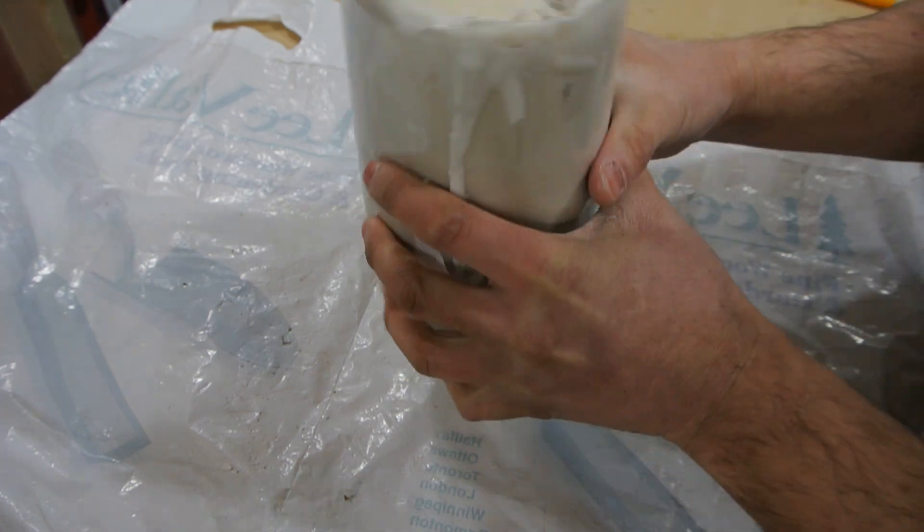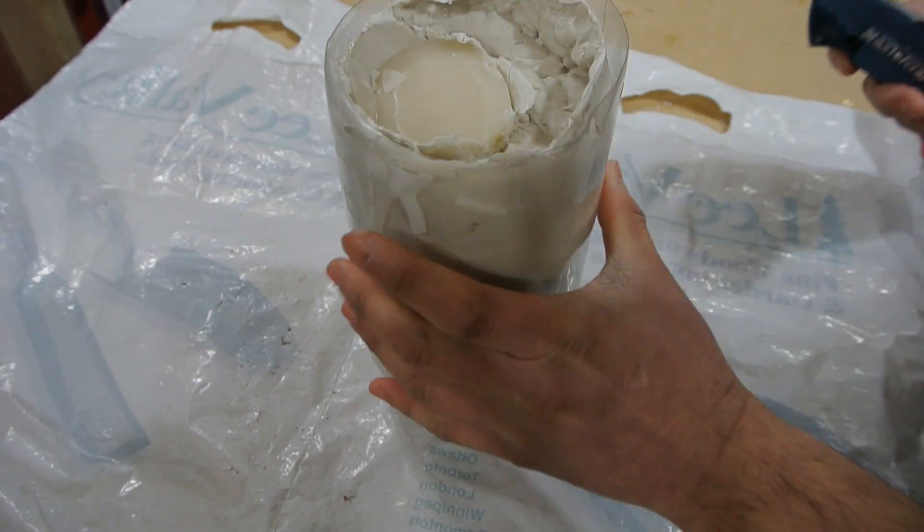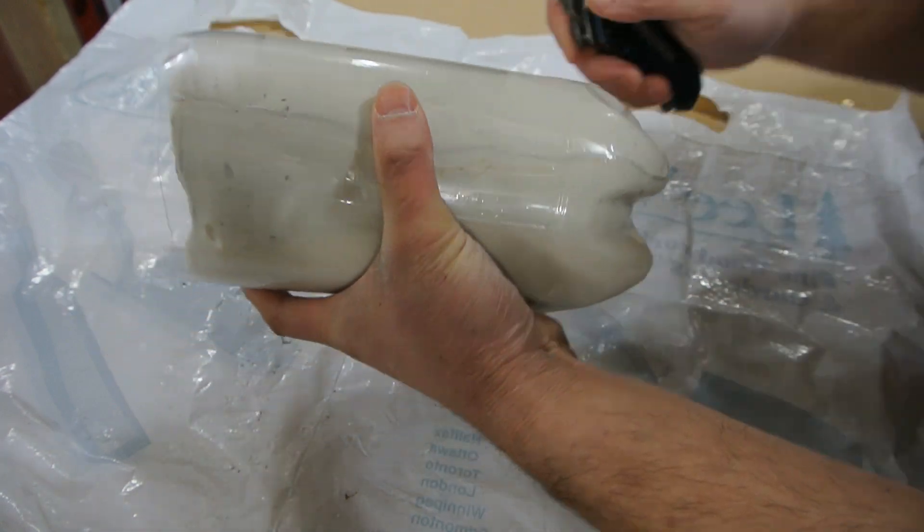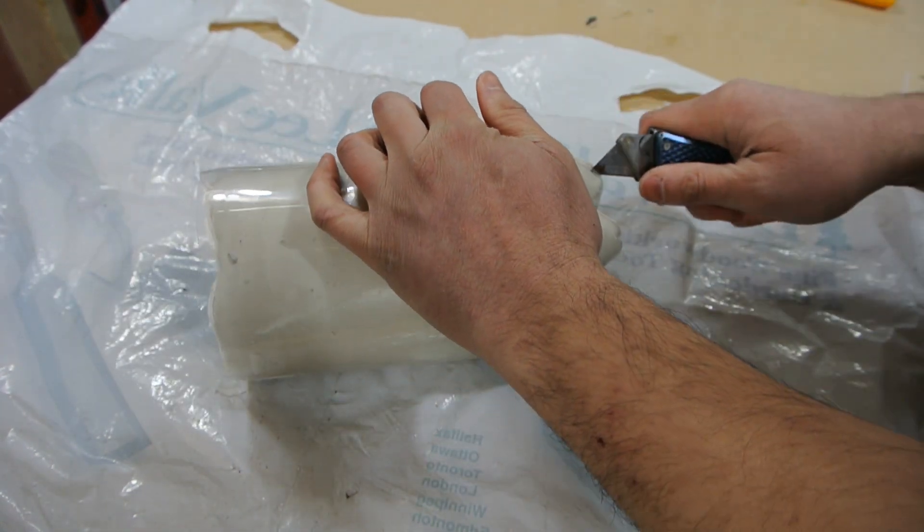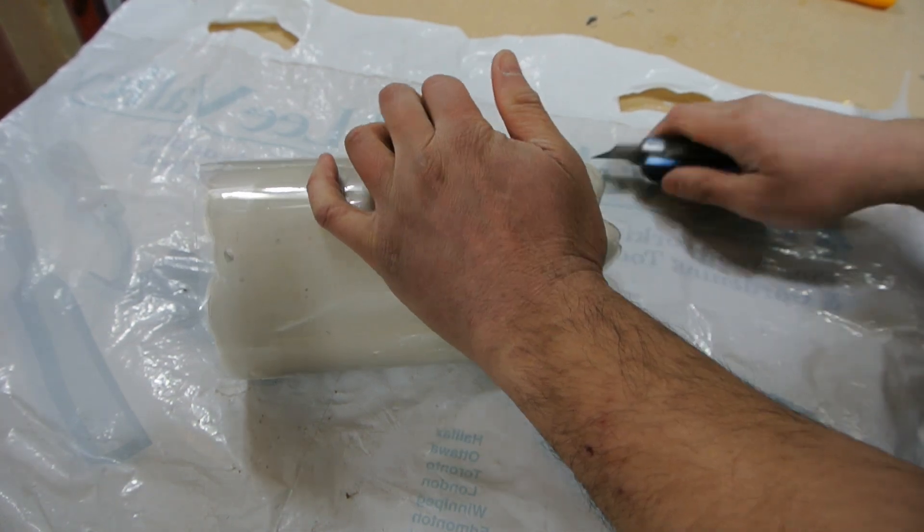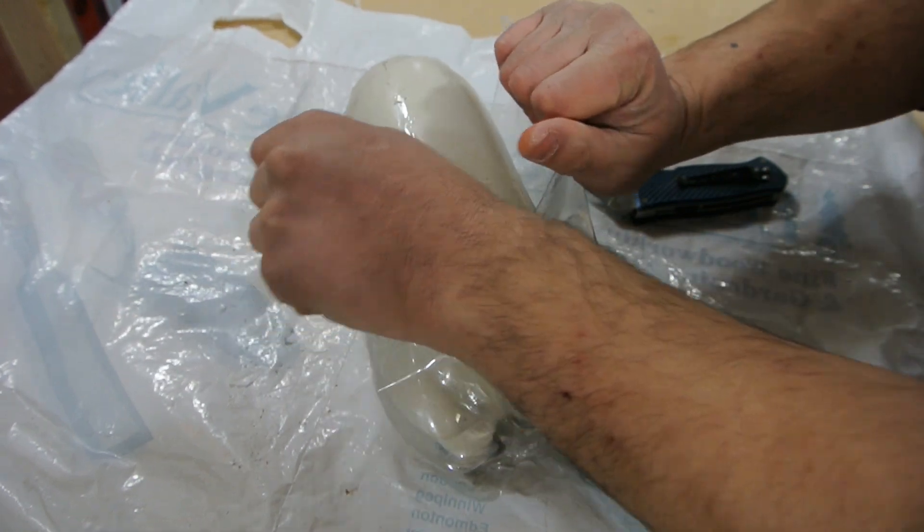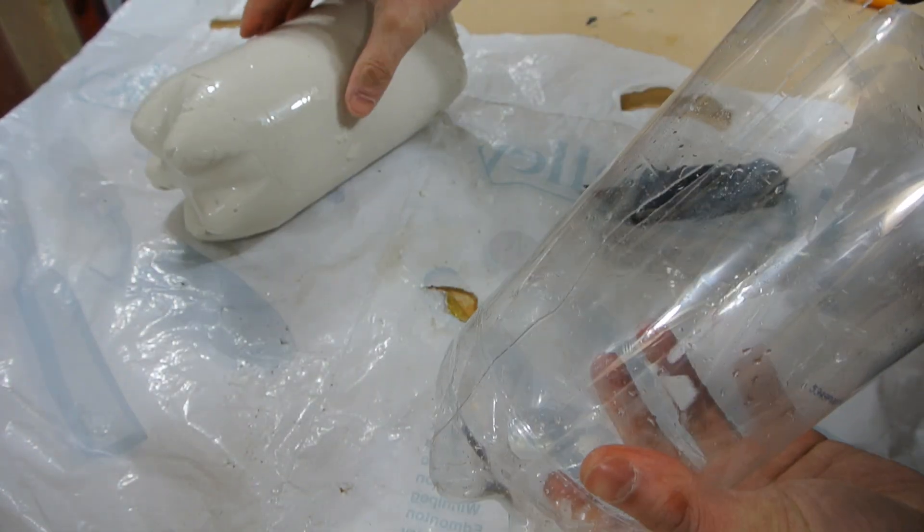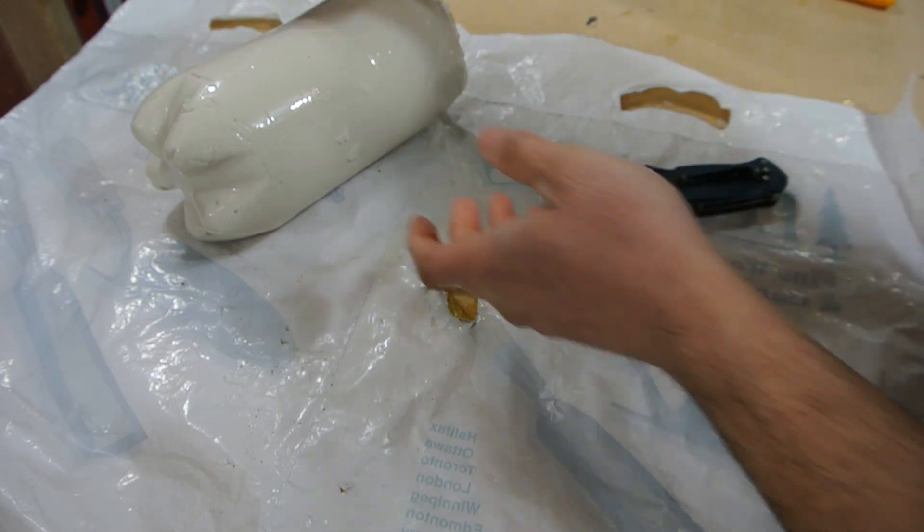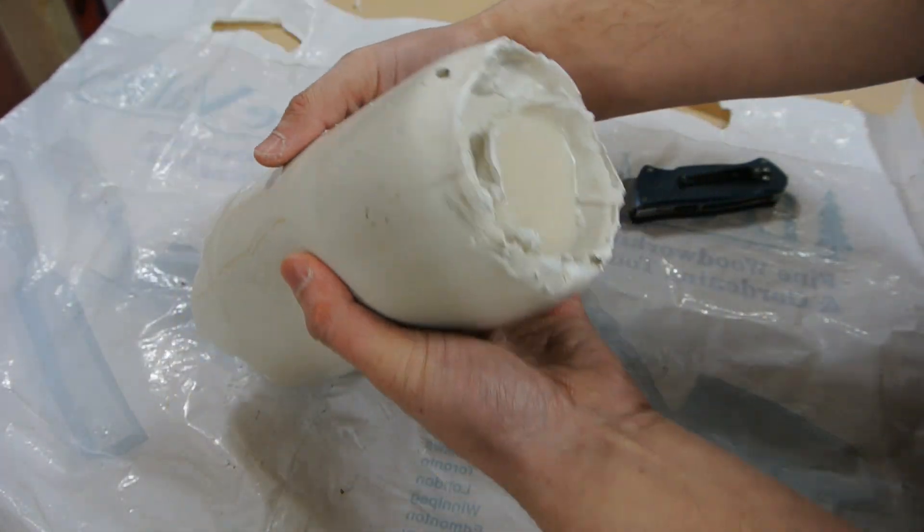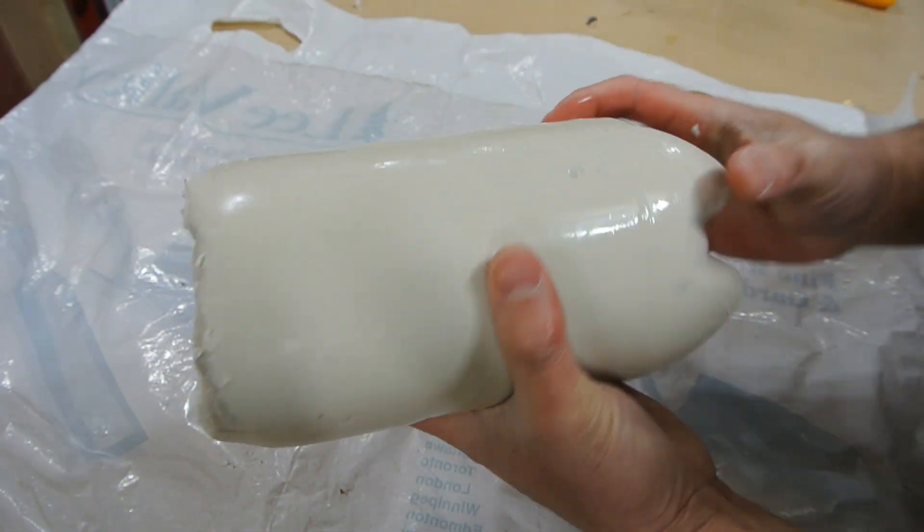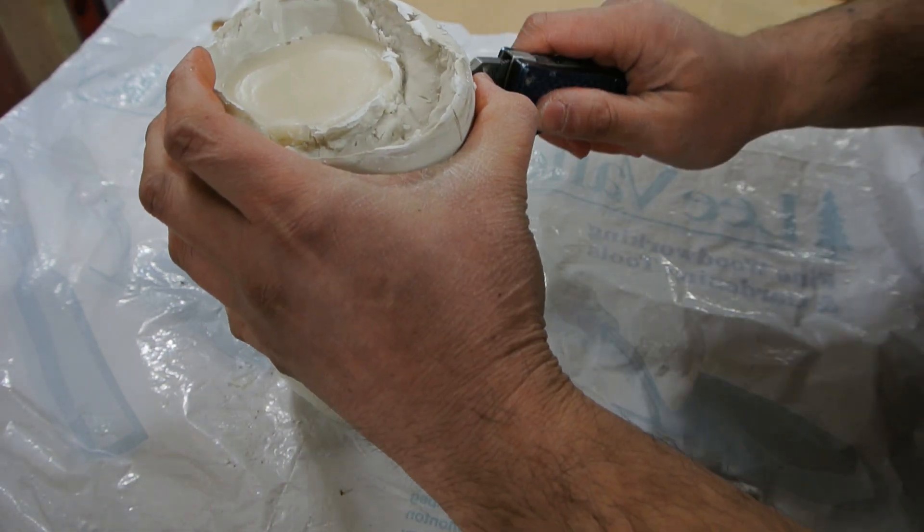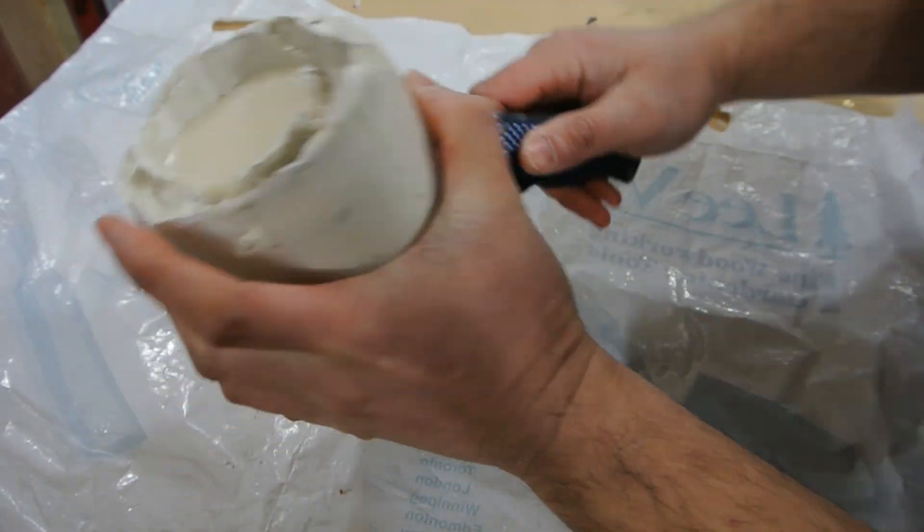So the wax is set up. I'm going to cut it out of this container. I'm going to be careful and peel out the alginate off of the wax. Because this is a cast with fingers, I want to be careful how I do this.